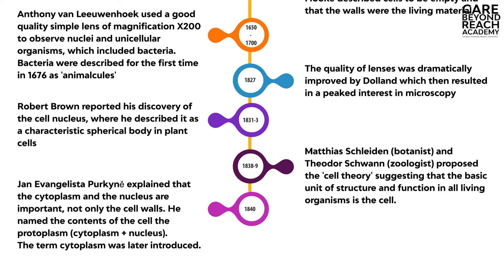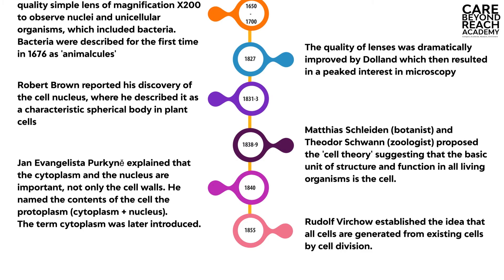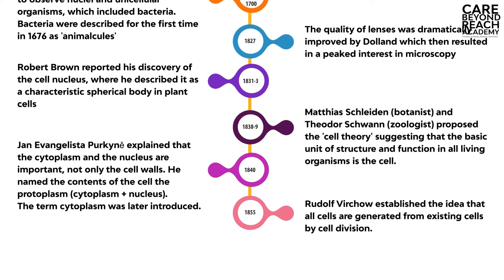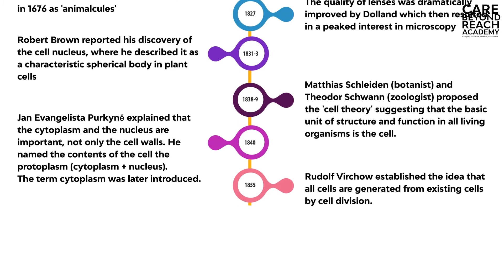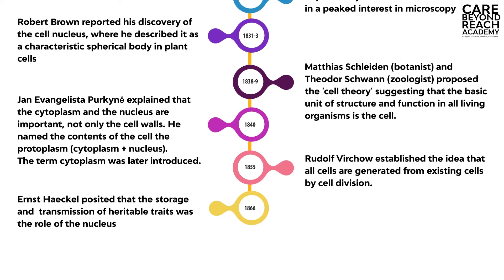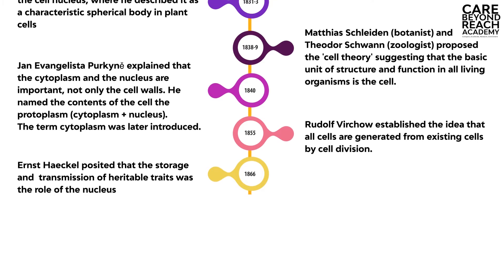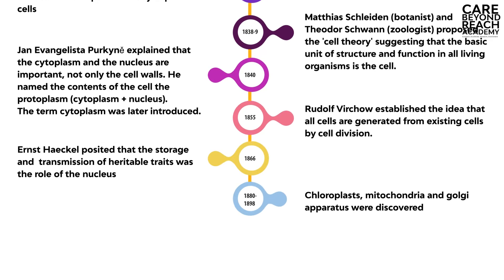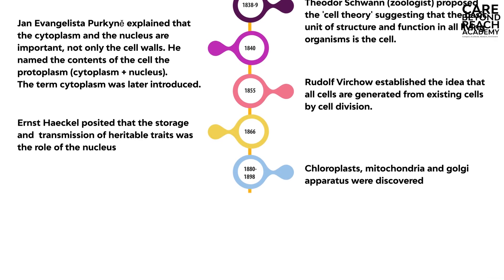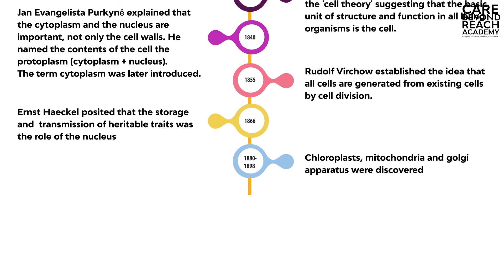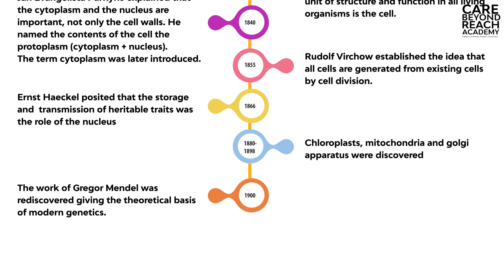The term cytoplasm was later introduced. In 1855, Rudolf Berkshire established the idea that all cells are generated from existing cells by cell division. In 1866, Ernest Haeckel posited that the storage and transmission of heritable traits was the role of the nucleus. In 1880 to 1898, chloroplasts, mitochondria, and the Golgi apparatus were discovered.